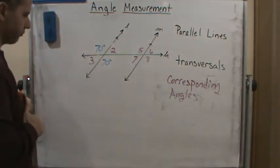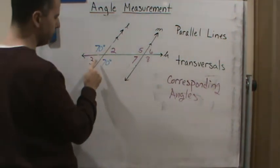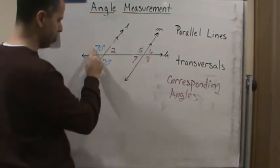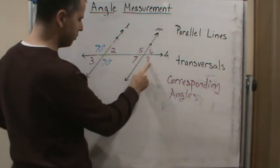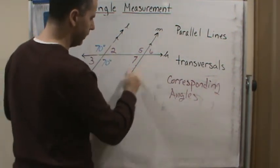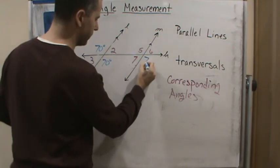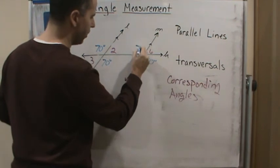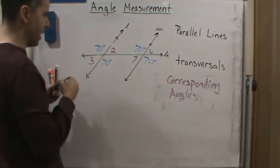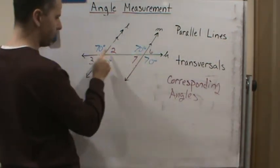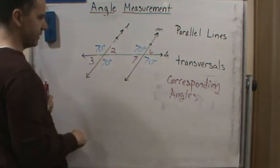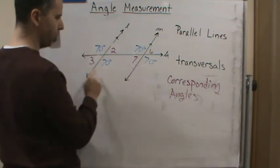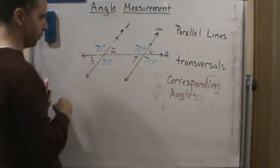I can use the fact that vertical angles have the same measure, so angle 4 must be 70 degrees. I also know that alternating exterior angles are of the same measure, so angle 8 is also 70 degrees. That makes angle 5 — because it's a vertical angle to angle 8 — also 70 degrees. And this is consistent with corresponding angles, since corresponding angles are equal.